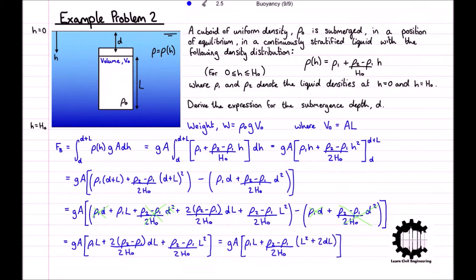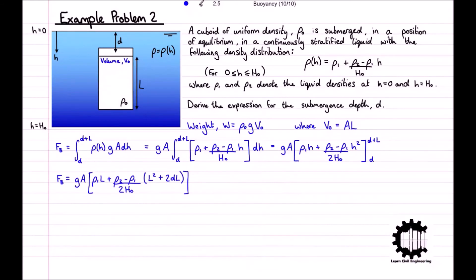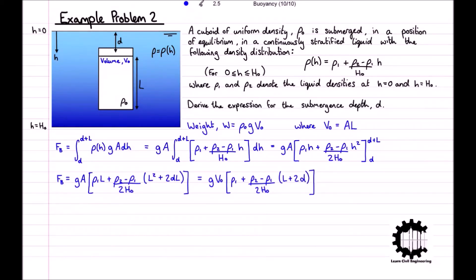You're welcome to pause here if you'd like to see the detailed steps for how we arrived at this expression. Taking a factor of l out of the brackets and using v_0 equals A times l, the equation simplifies to F_b equals g v_0 times [rho_1 plus (rho_2 minus rho_1)/(2 h_0) times (l plus 2d)].